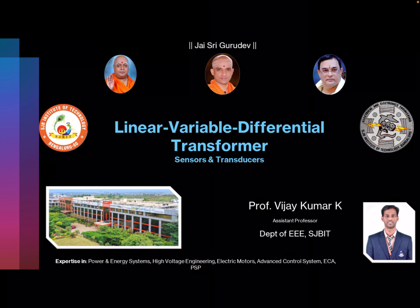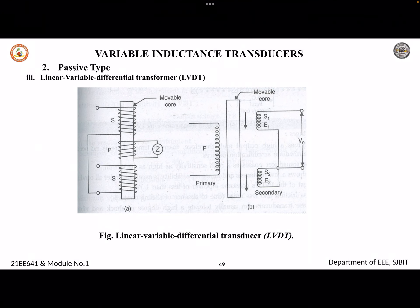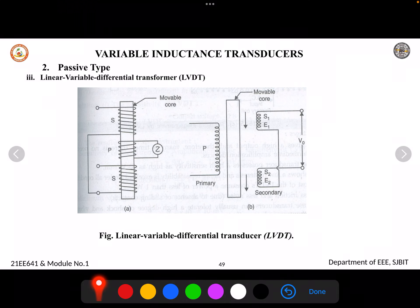Let us discuss LVDT, that is Linear Variable Differential Transformer, with respect to sensors and transmissions. LVDT is basically a type of variable inductance transducer — it is called a variable inductance transducer because we vary the inductance of the transformer. It is also a passive type of device.